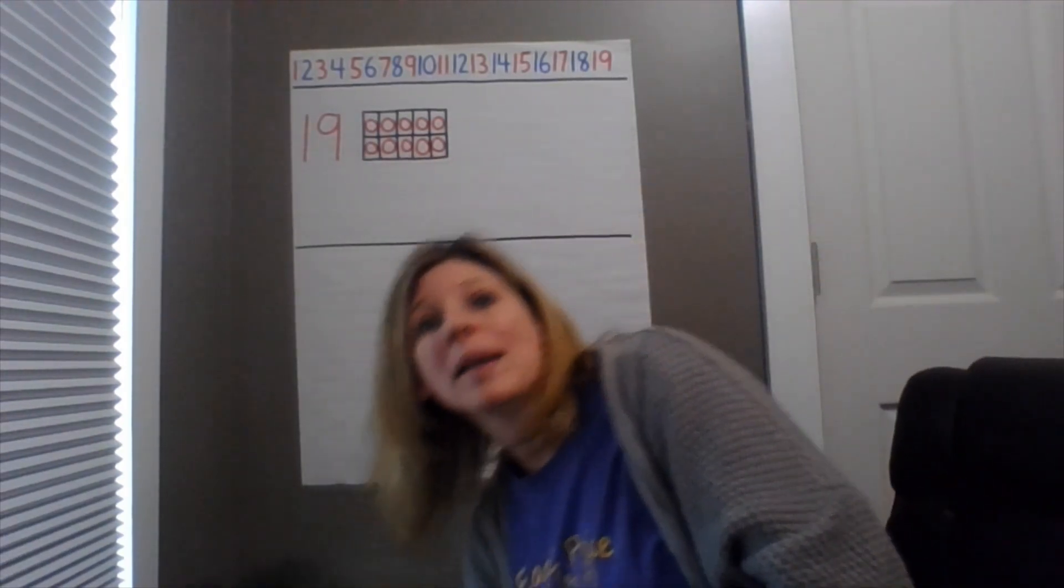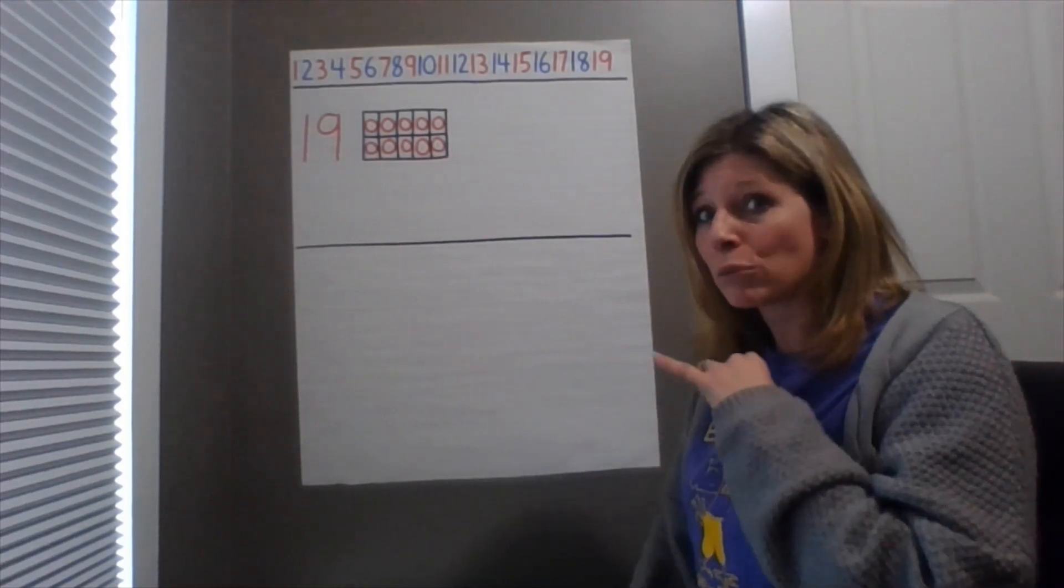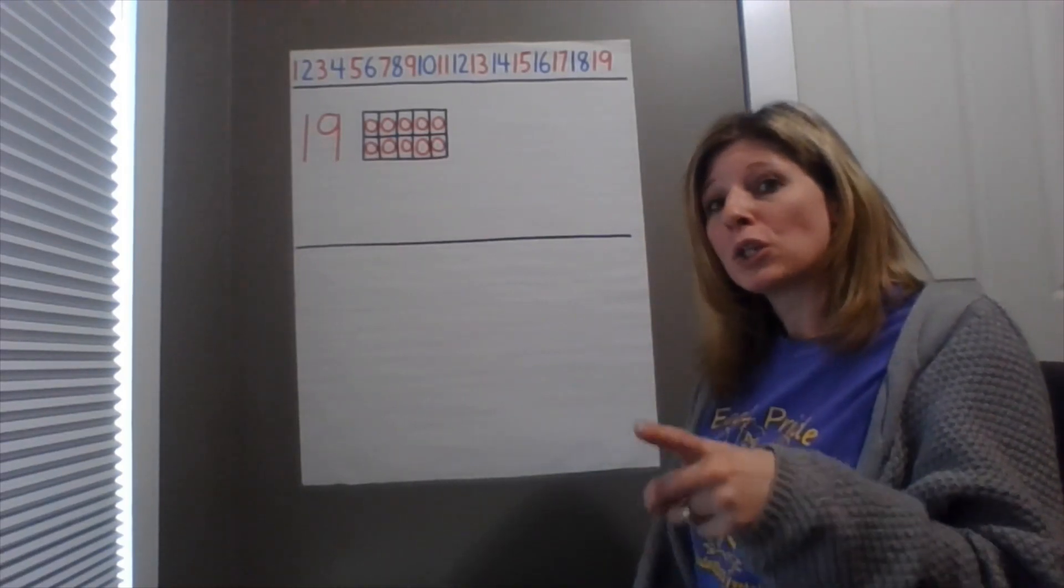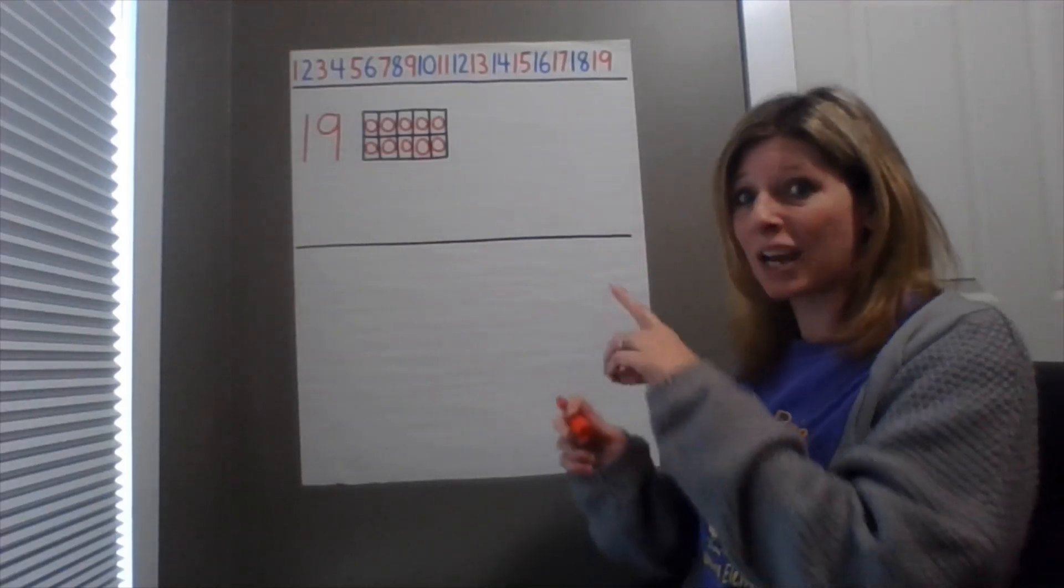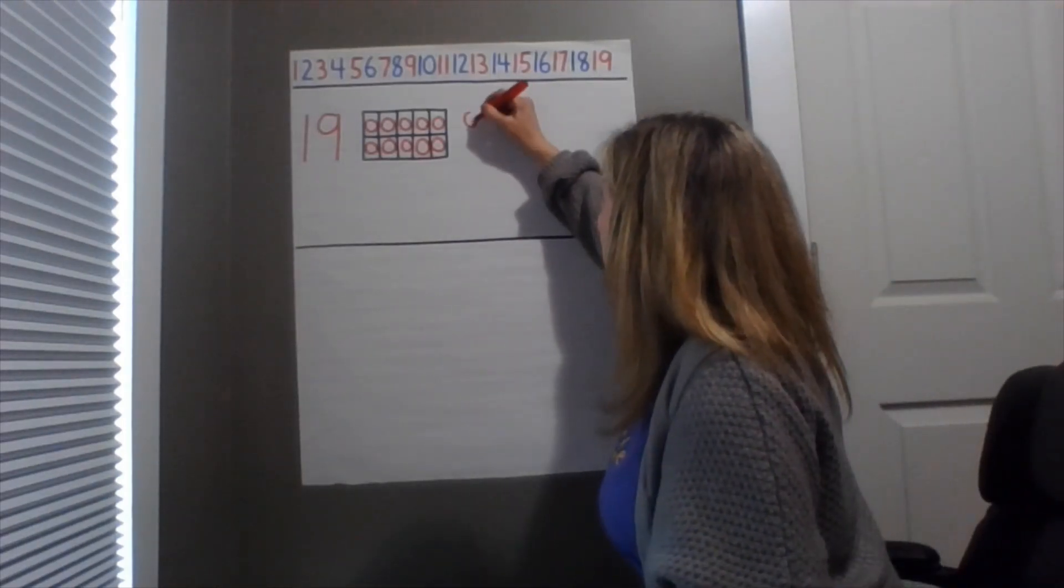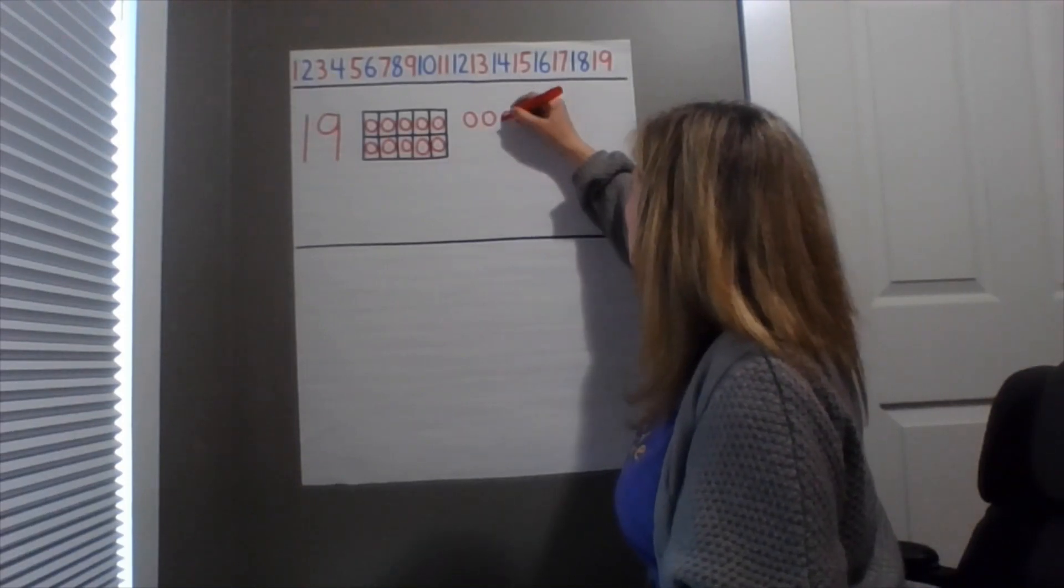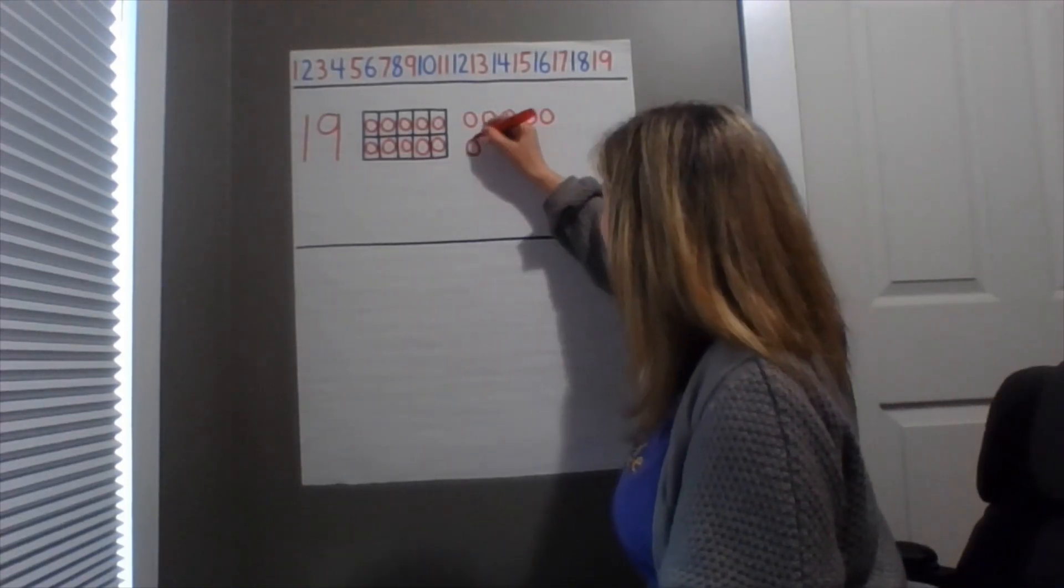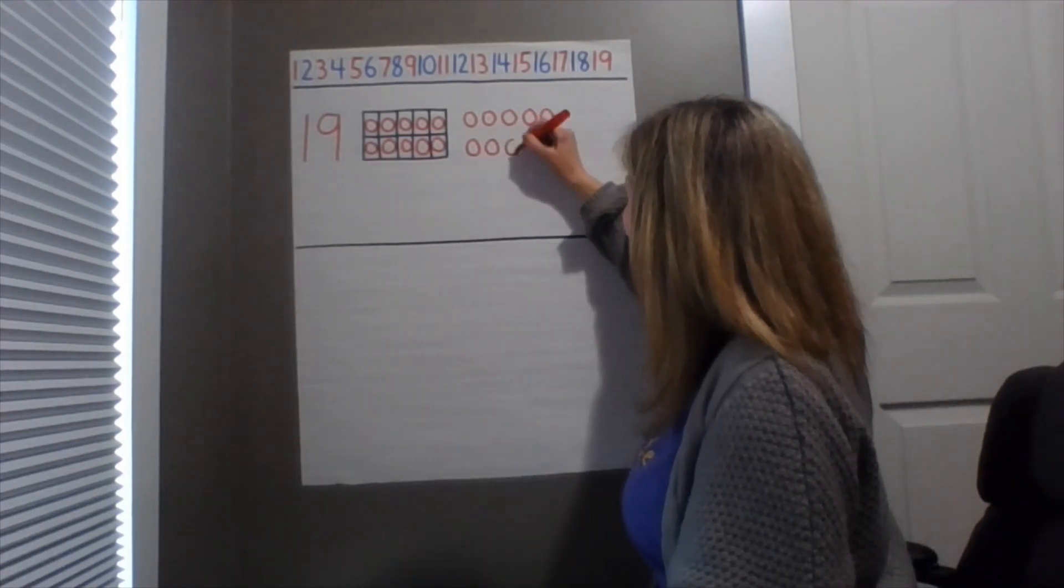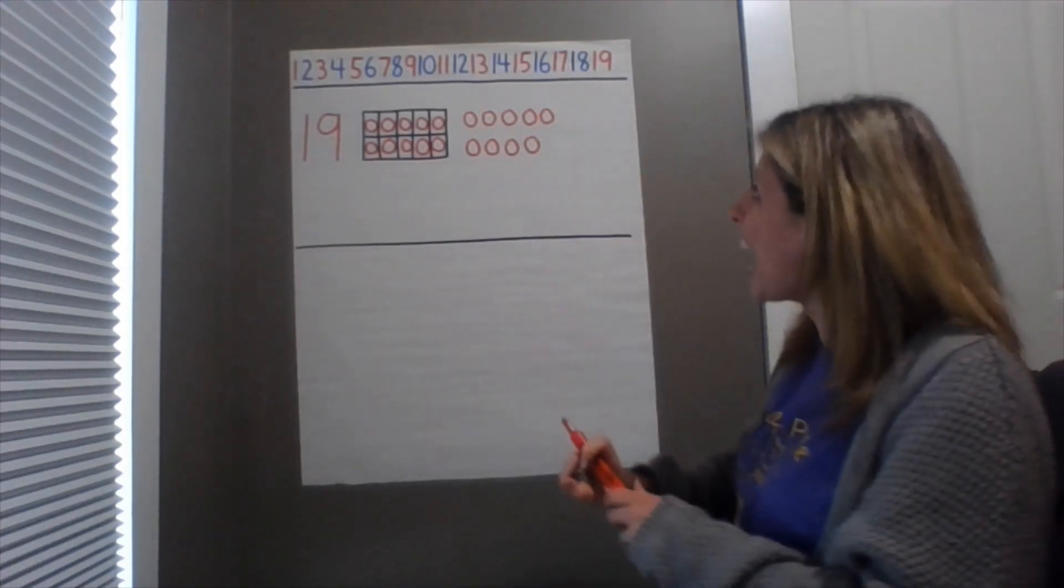So I'm going to draw nine counters. As I'm doing that, I want you to take your objects that you're using as counters and to put them next to the 10 frame, just like this. One, two, three, four, five, six, seven, eight, and nine.